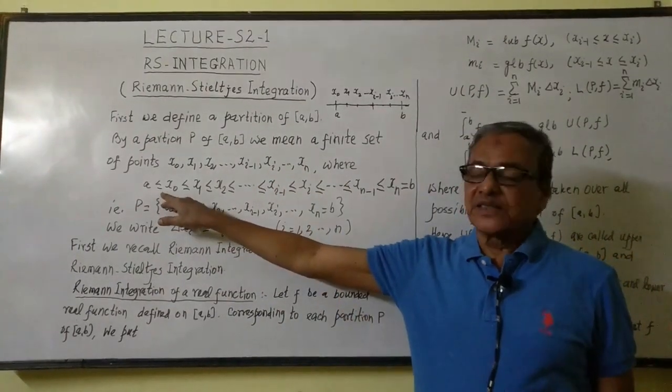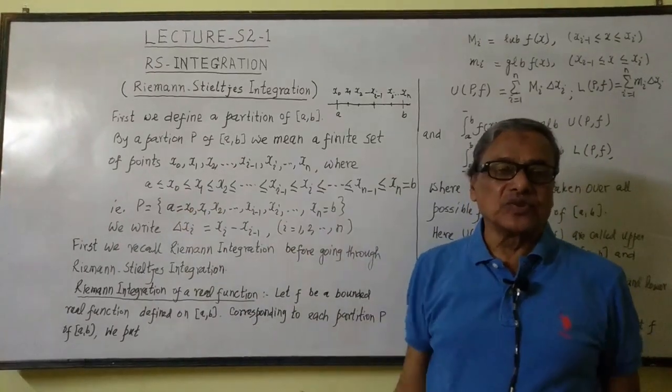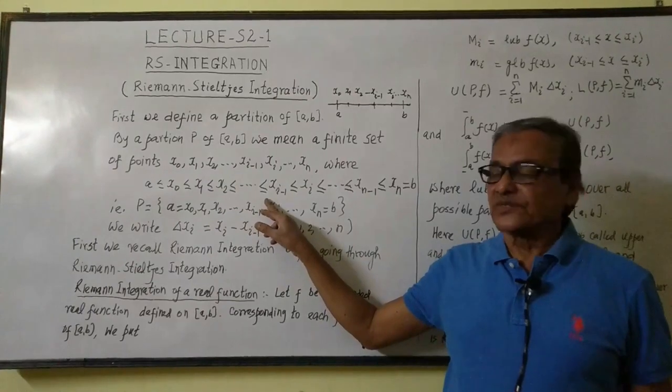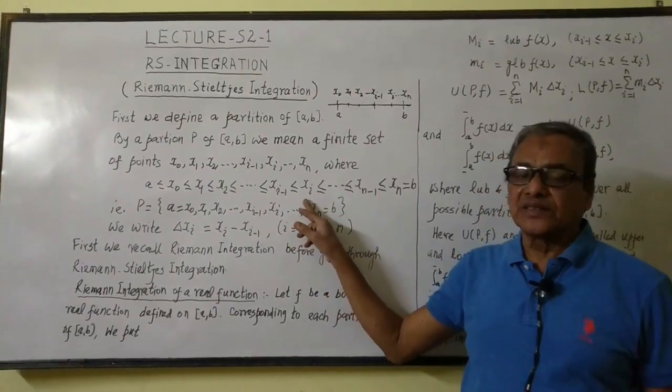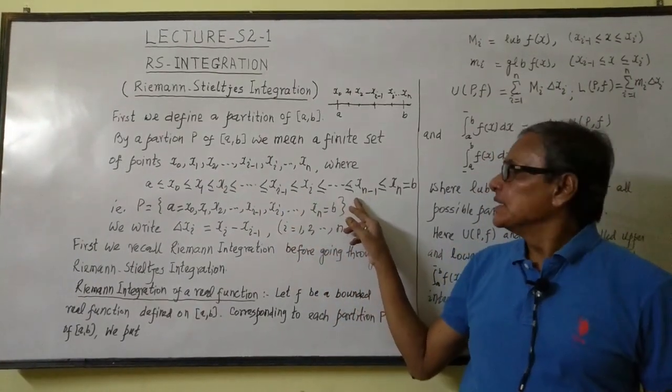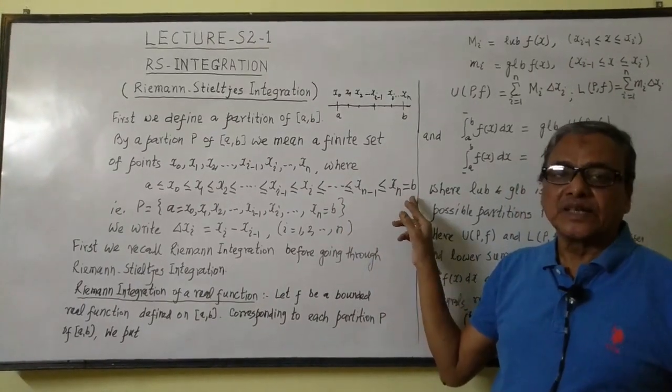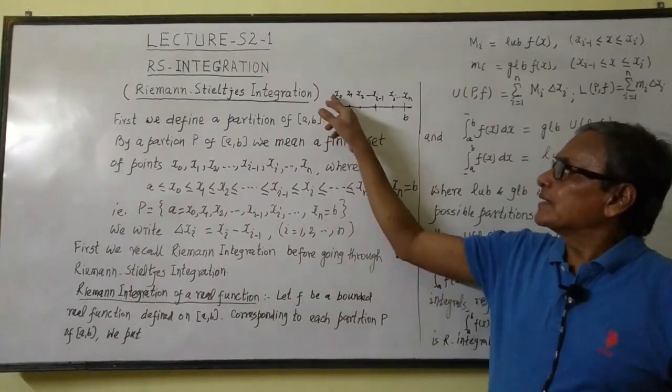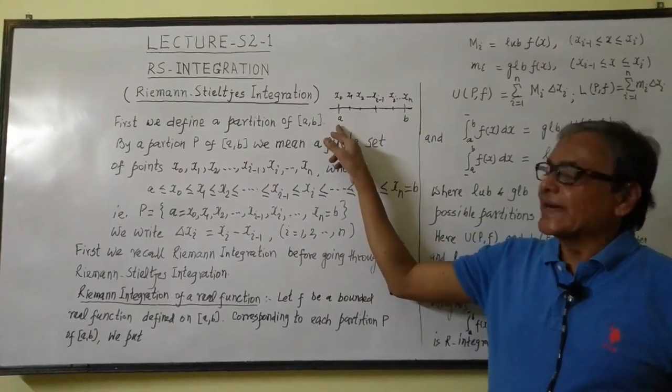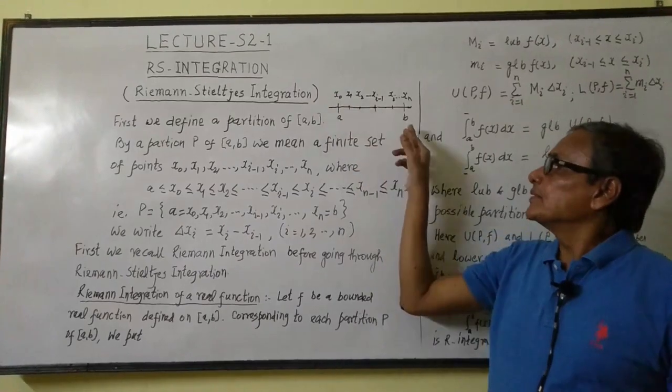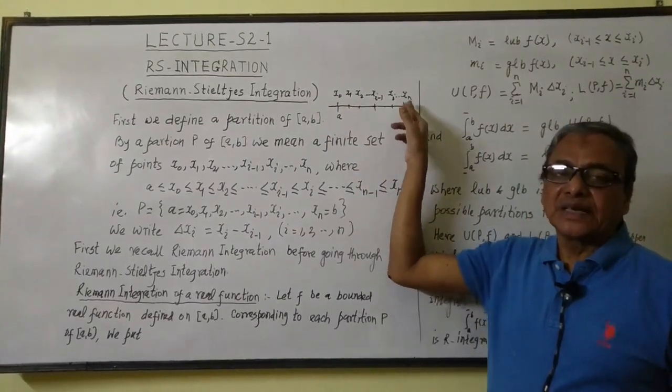Here a is less than equal to x0, less than equal to x1, less than equal to x2, and so on, less than equal to xi-1, less than equal to xi, and so on, less than equal to xn equal to b. So we have taken the point a as x0 and the endpoint b as xn.